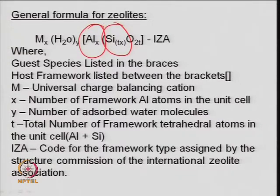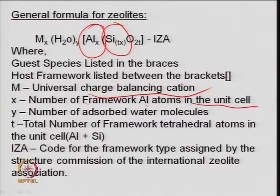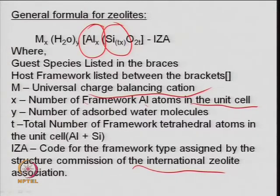In the zeolite formula, M is the charge-balancing cation, x is the number of aluminum atoms in the unit cell, y is the number of adsorbed water molecules, and t is the total number of framework tetrahedral atoms (aluminum plus silica). IZA codes define the structure based on properties. Generally, the aluminum count x should be greater than 2 for the Si-O-Al connections to occur.